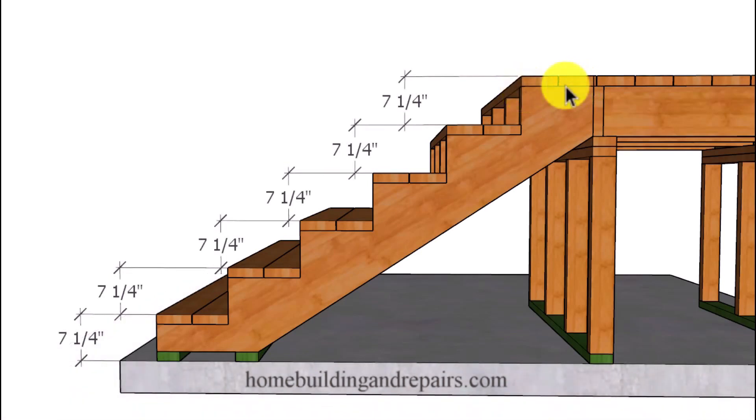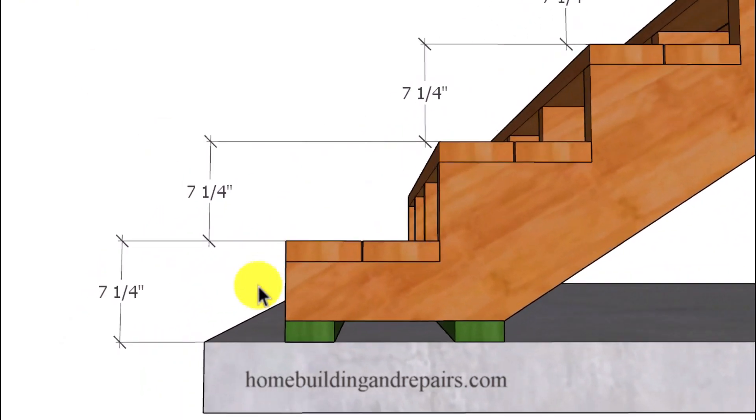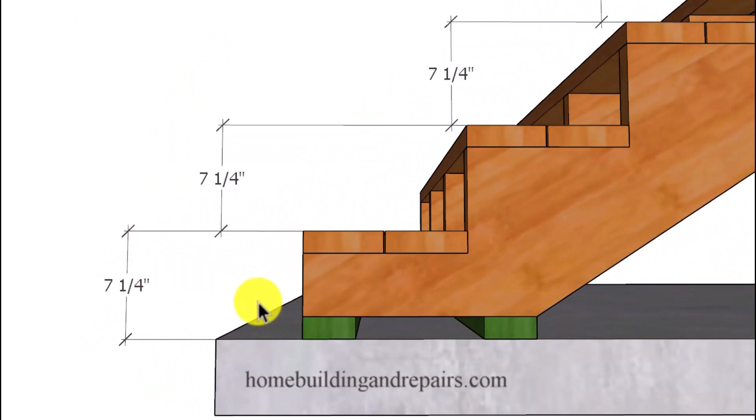Now the first thing I want to do is explain how each one of these steps will impact all of the stringer riser measurements. So here we have a finished stairway with seven and a quarter inch risers going all the way down to the lower level. And if we go to the lower level you can see where I've had to adjust the bottom part of the stair stringer.